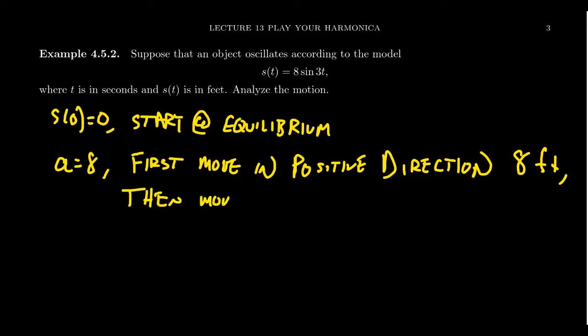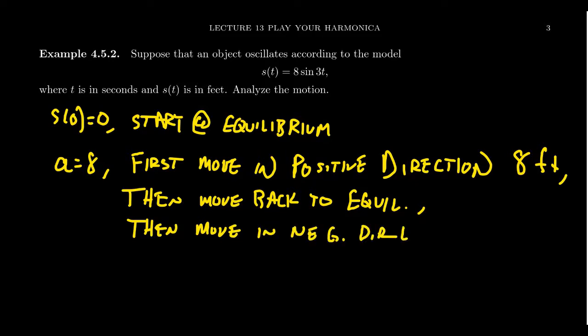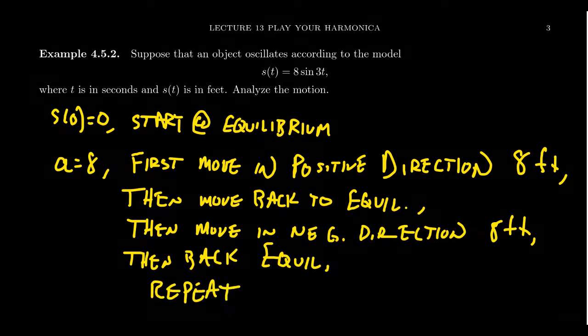Then, of course, you're going to move back to equilibrium. Then you're going to move in the negative direction, another 8 feet. And then after that, you move back to equilibrium again. And then at that point, you repeat the process because that's the description of a single cycle right there. So it's going to continue to repeat itself over and over again.